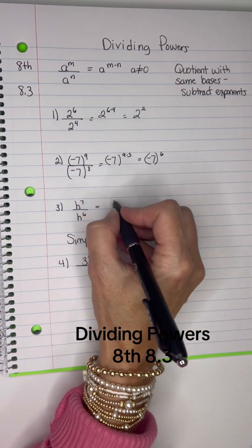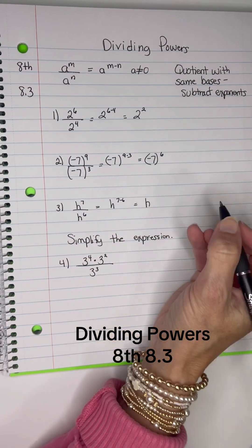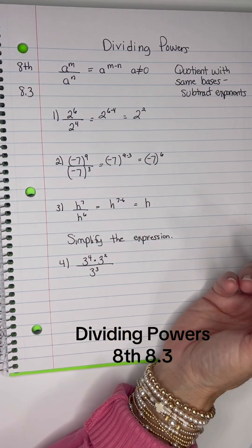And then here, I have the same base, so 7 minus 6 is 1. So I have H to the first power that we don't write down.